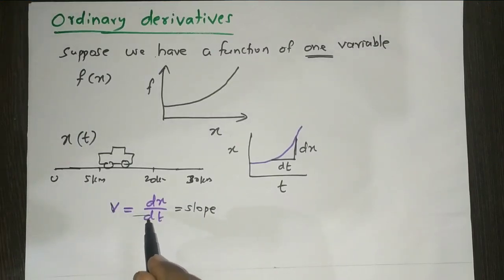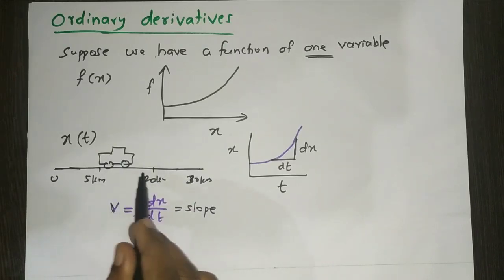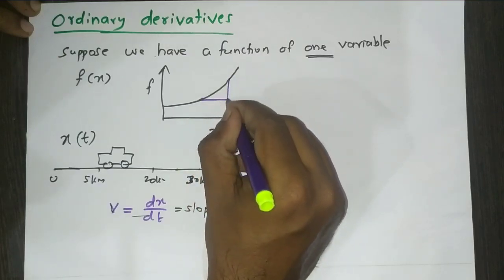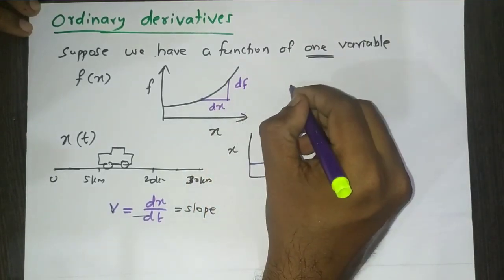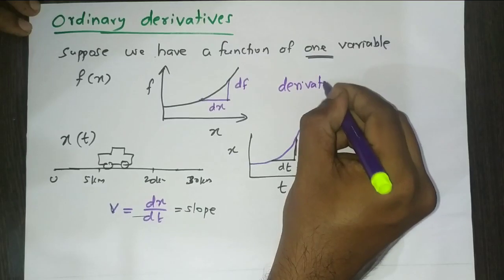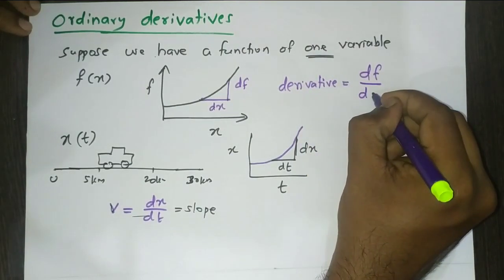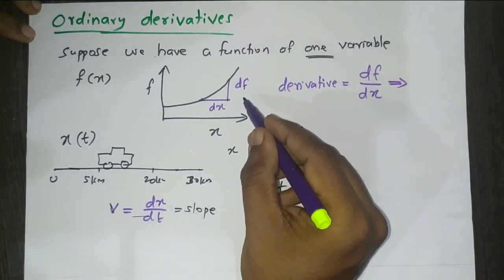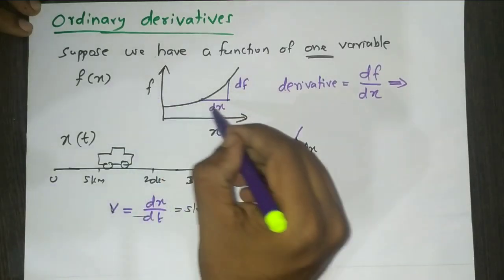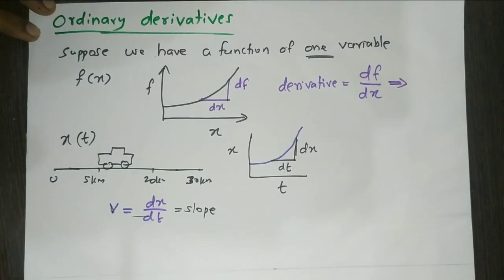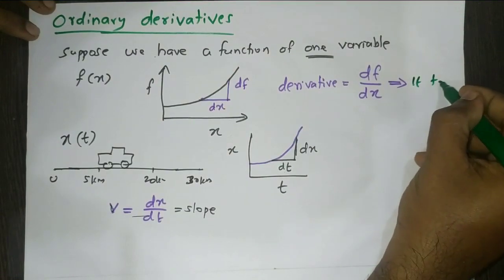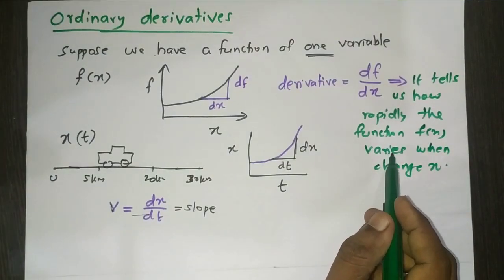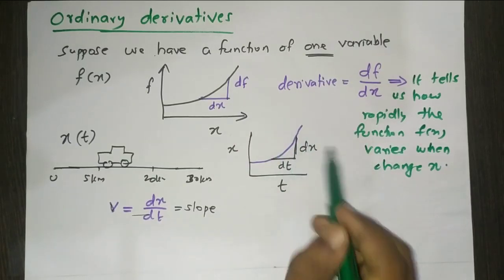This is the position, and this is the velocity over time. In our notation it is nothing but the slope, df by dx. The meaning is that it tells us how rapidly the function f(x) varies with x — that is the physical meaning. It tells us how fast the function varies.